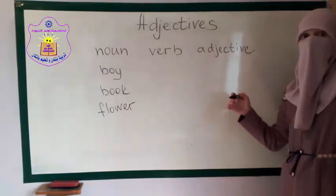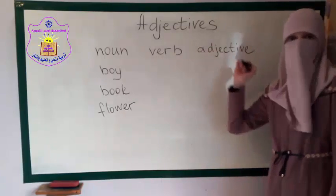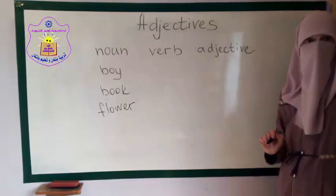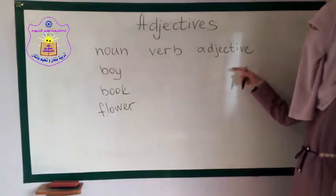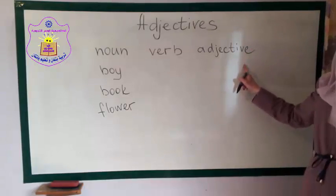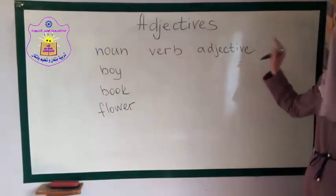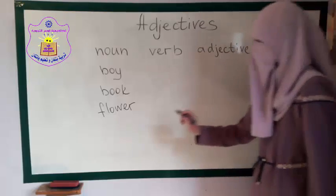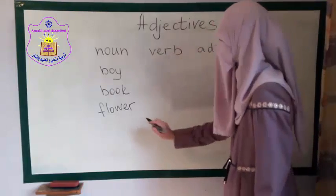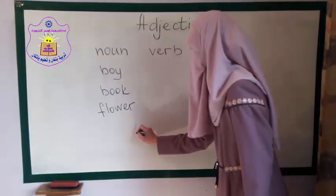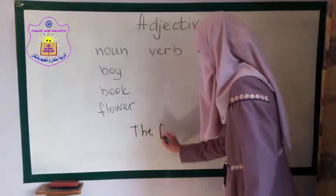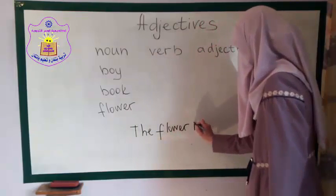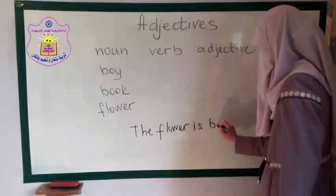Now, we want to describe these nouns. What does it mean to describe a noun? We need to use adjectives — 'sifah'. For example, let's make a simple sentence: 'The flower is beautiful.'